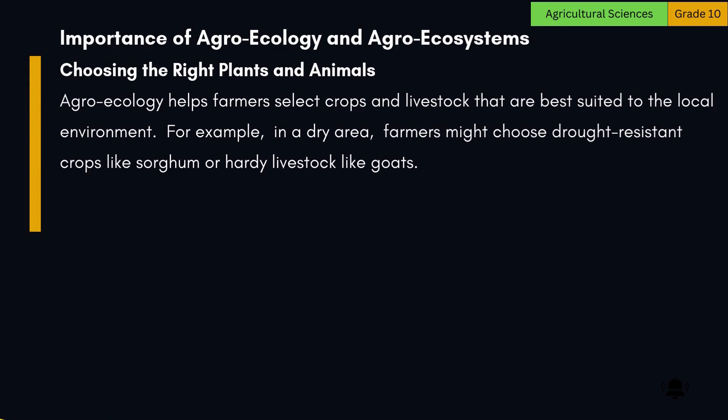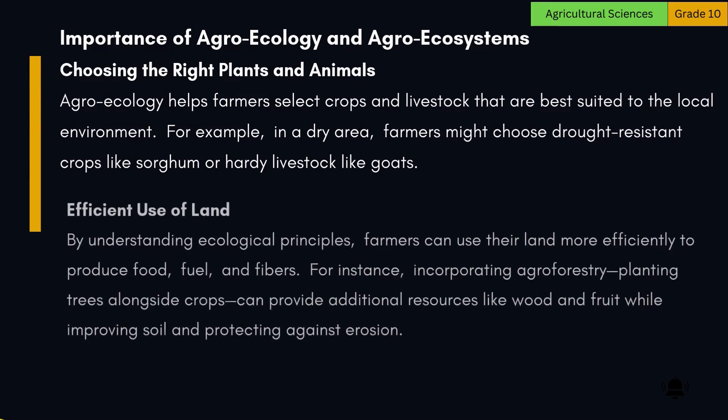Choosing the right plants and animals: Agroecology helps farmers select crops and livestock that are best suited to the local environment. For example, in a dry area, farmers might choose drought-resistant crops like sorghum or hardy livestock like goats.